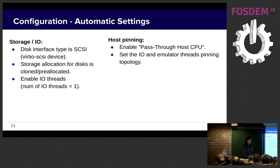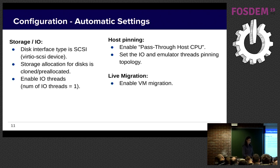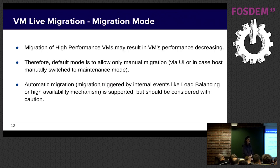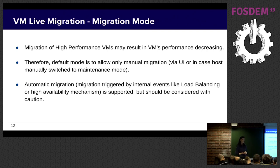The last automatic setting is live migration — we enable live migration. This doesn't directly affect performance but we still need it as discussed before. When a high performance VM is migrated from one host to another, performance may decrease because the destination host may not have the same settings as the source. Therefore, the default migration mode is manual, not automatic — meaning the user controls when migration happens.